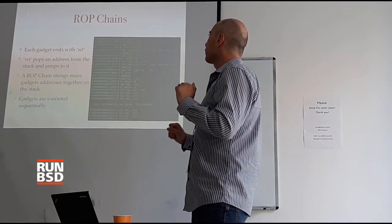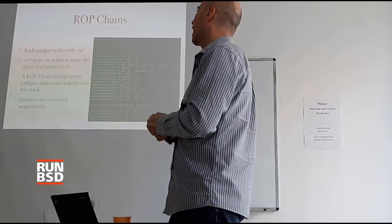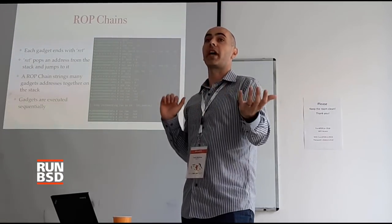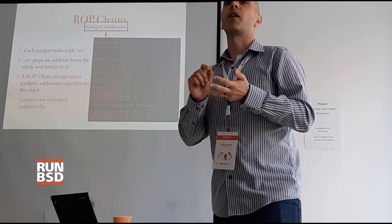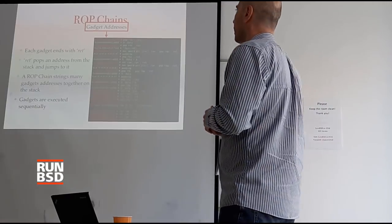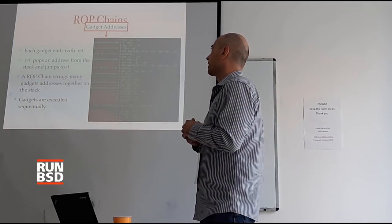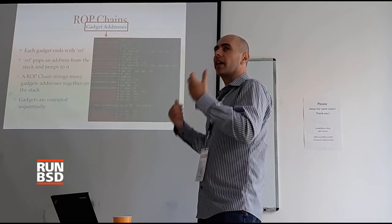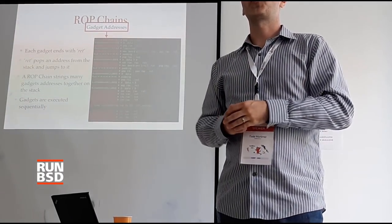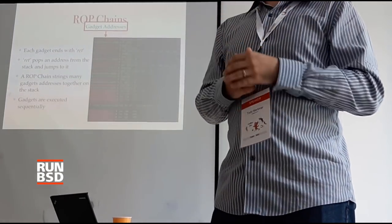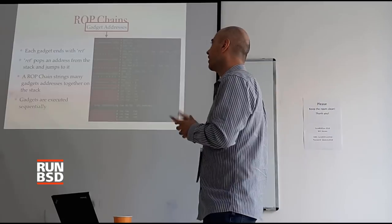This is an example of a ROP chain on the right. Every gadget is going to end with a RET — in this case a C3 byte. The RET will, as you know on x86, pop the next address off the stack and jump to it. So our ROP chain takes many of these addresses and strings them together. The gadget addresses are highlighted in red; the green ones in between are either data or padding. The first address is going to pop the next value off the stack into RSI — that's data. Then it's going to return to the next gadget, which pops something into RDI, which is actually 'bin sh'. So this ROP chain will take control of your program and make it exec a shell.